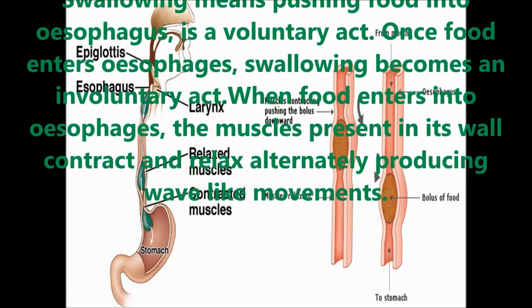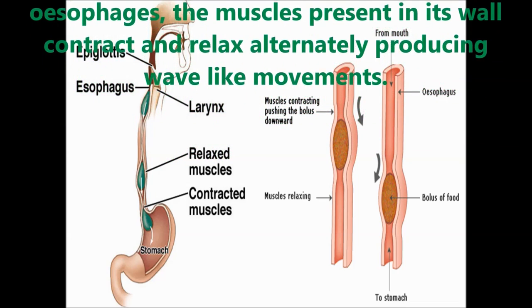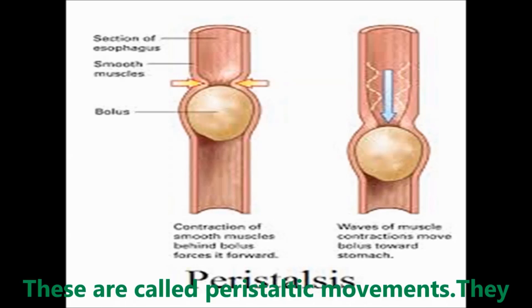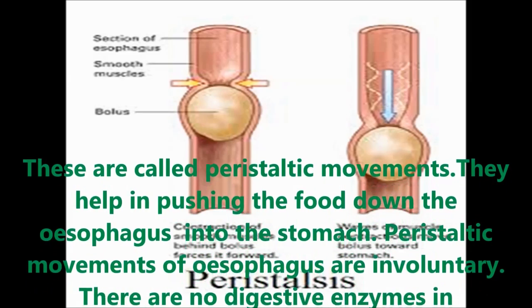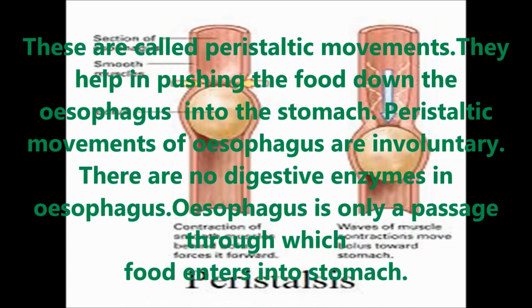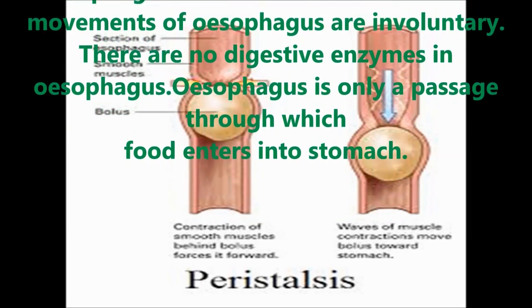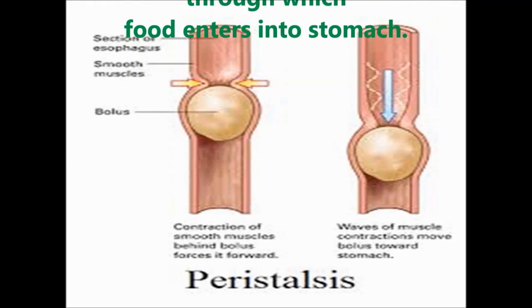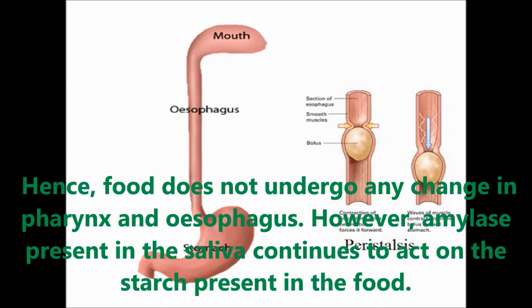When food enters the esophagus, the muscles in its walls contract and relax alternately, producing a wave-like movement. These movements are called peristaltic movements, and they help in pushing the food down through the esophagus into the stomach. The peristaltic movements of the esophagus are involuntary. There are no digestive enzymes in the esophagus; it is only a passage through which food enters the stomach.